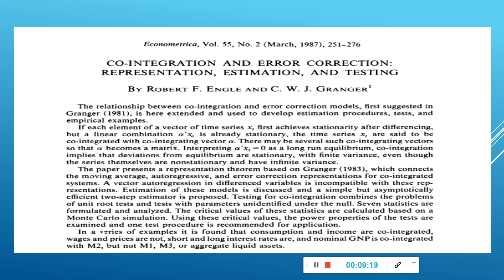The stationarity problem, the finite variance problem — all these problems were worked on using financial data, and the birth of financial econometrics happened in March 1987 in the hands of Robert Engle and Clive Granger. Please remember four key words: co-integration, error correction, Granger causality, and finite variance. These are the fundamental cornerstones of the Engle-Granger work on co-integration and error correction — representation, estimation, and testing — in 1987.